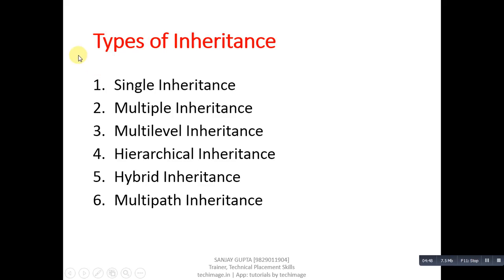The next feature is types of inheritance. There are a total of six types: single inheritance, multiple, multi-level, hierarchical, hybrid, and multi-path. We can implement any type of inheritance required to solve a particular problem. These types will be discussed later in the tutorial related to inheritance.